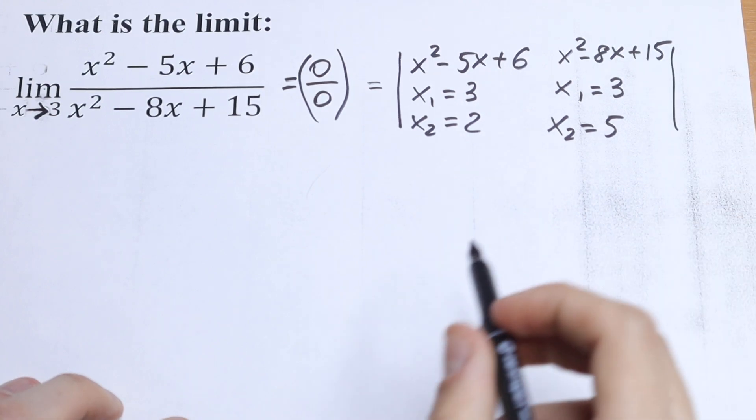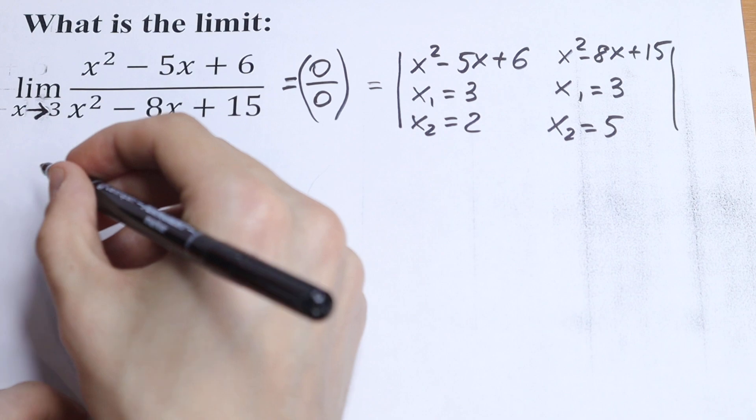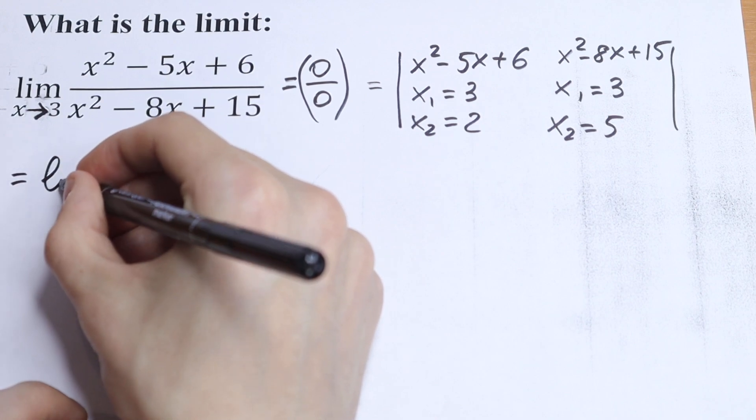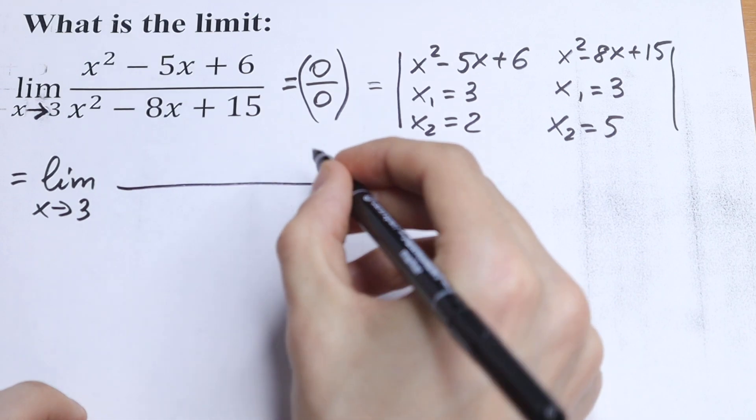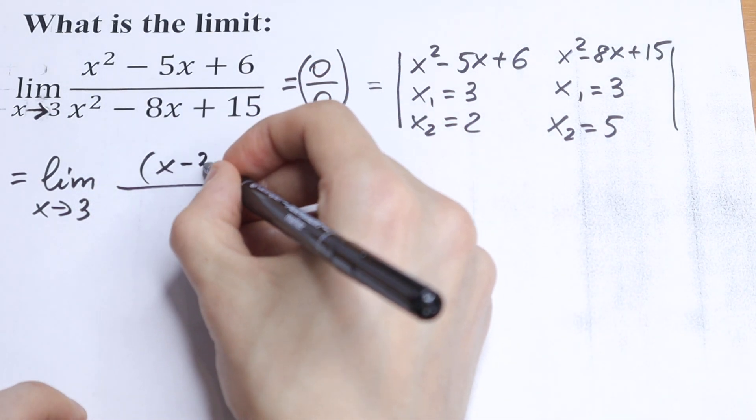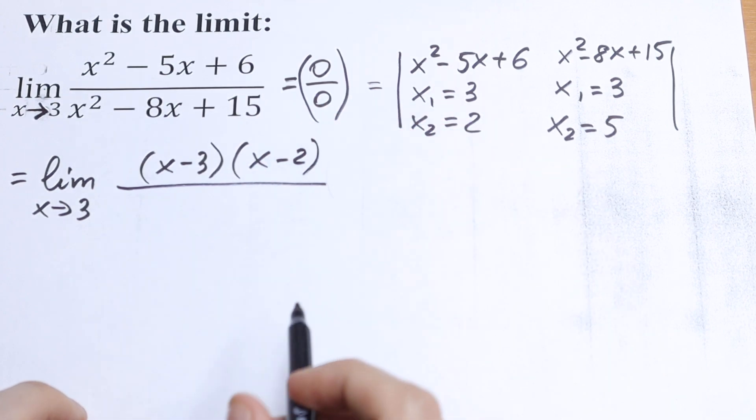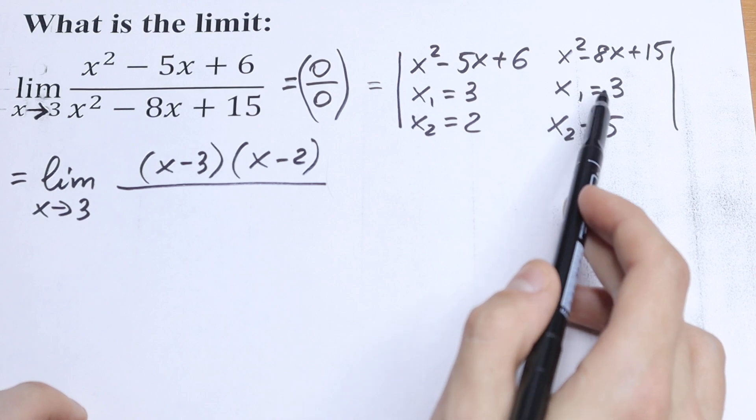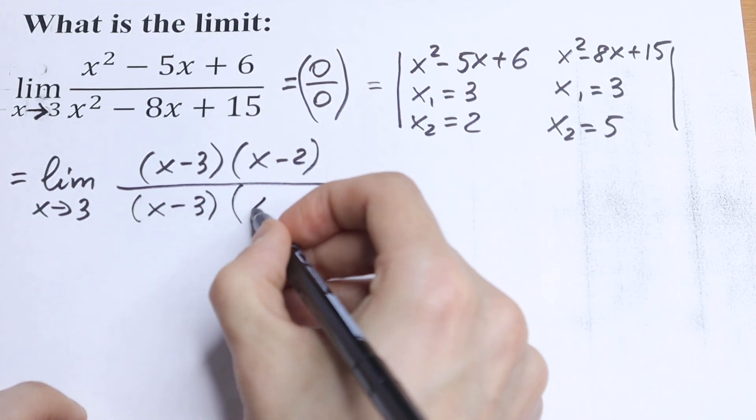So we can just simplify this a little bit. Simplify our numerator and our denominator. So as a result, we will have limit x approaches 3. And we will have in our numerator x minus 3, x minus 2. And in our denominator we will have x minus 3, x minus 5.